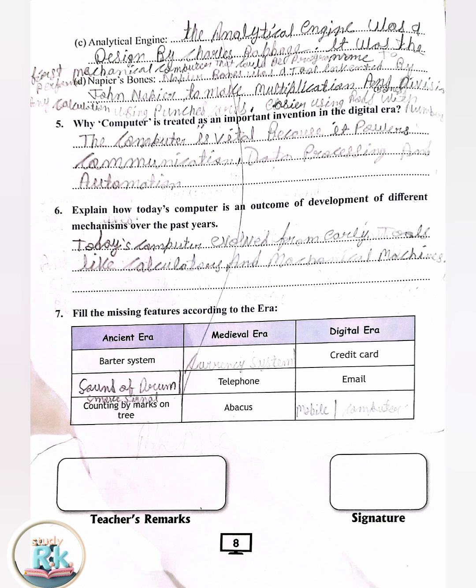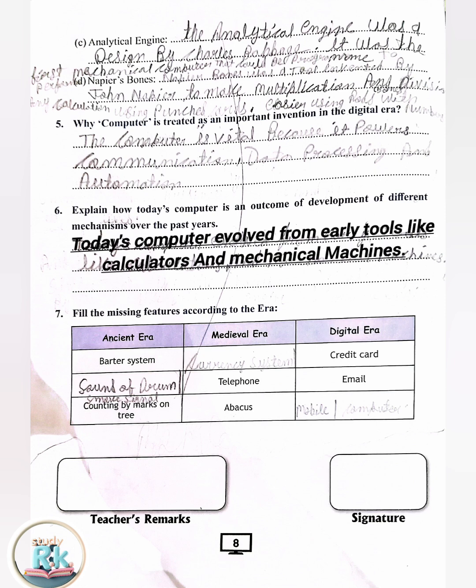6. Explain how today's computer is an outcome of development of different mechanisms over the past years. Answer: Today's computer evolved from early tools like calculators and mechanical machines.